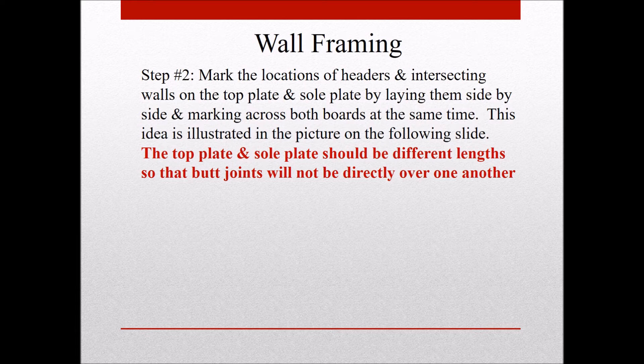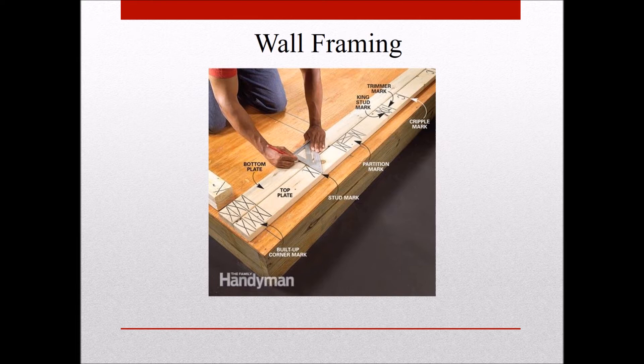The next step in wall framing is to mark the locations of headers and intersecting walls on the top plate and sole plate. We're going to lay these down side by side and mark them at the same time so they are exactly the same when you start building. Anytime you do this, make sure the top plate and sole plate are different lengths so butt joints don't end up directly over one another.